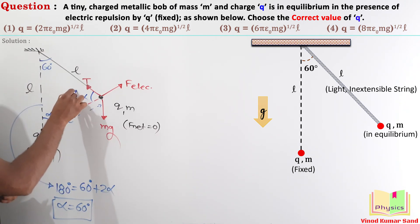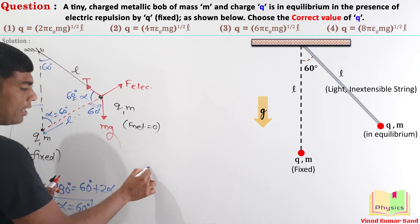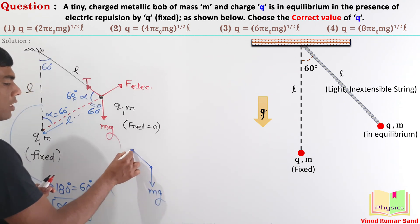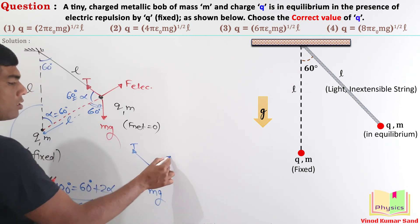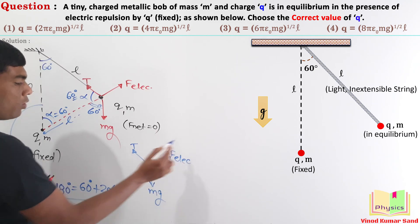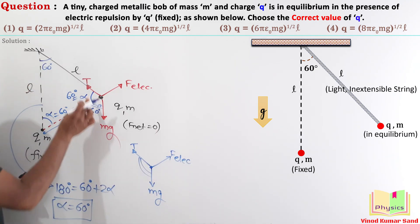Now, we have the values of these angles 60 degree, 60 degree. If this angle is 60 degree, how much is this angle? It should also be 60 degree alternate angle. So, this total angle between the tension and Mg is 120 degree. Let us mark it here. This was Mg, this was tension and this was electric force. We got the angle between tension and Mg as 120 degree.